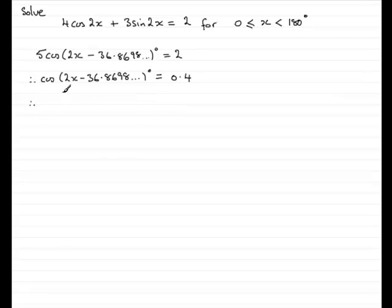We now need to remove the cosine and to do that we take the inverse cos of both sides and that will leave me with 2x minus 36.8698 and so on degrees is equal to the inverse cosine of 0.4.